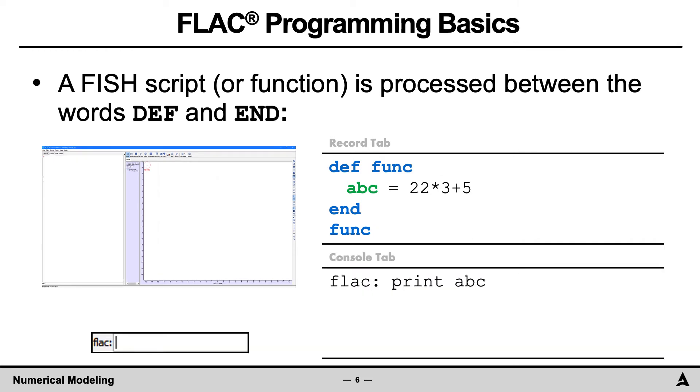To view the values of the variables from the executed script, first click Console. At the bottom beside FLAC, type print ABC for this example, and then hit Enter. This will print the value of this variable.